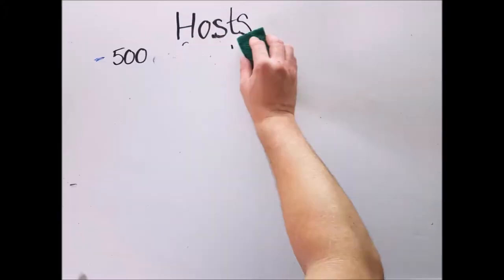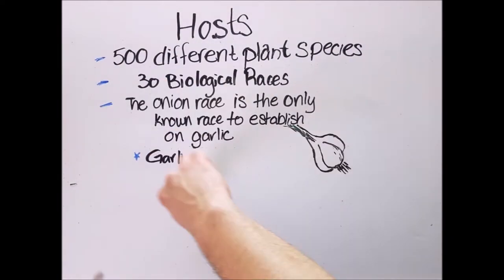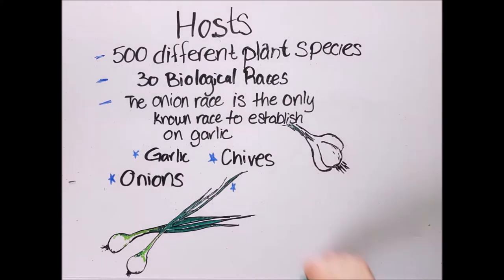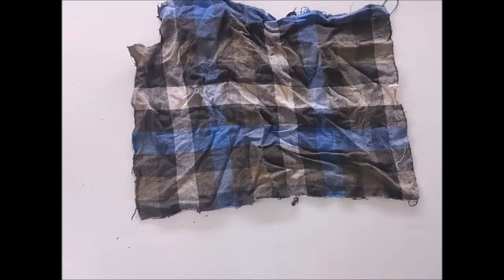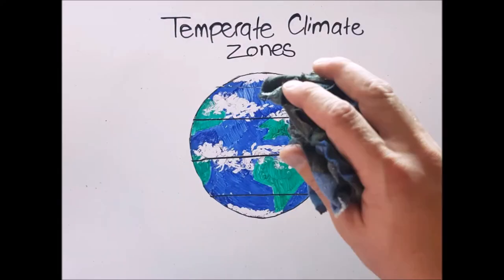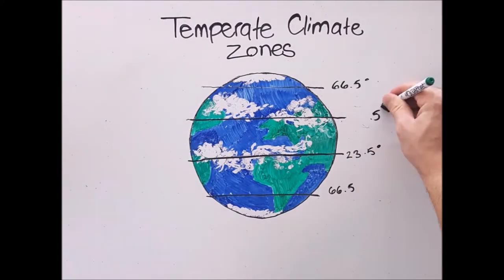Ditylenchus dipsaci has a range over 500 different plant hosts, but only 30 different biological races. The onion race is the only known race to establish on garlic. Ditylenchus dipsaci occurs locally in most temperate areas of the world, but it does not seem to be able to establish itself in tropical regions, except at higher altitudes that have a temperate climate.